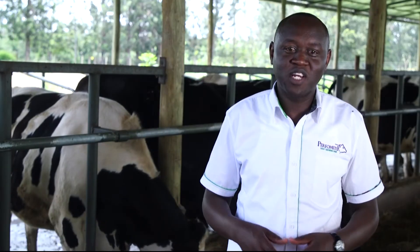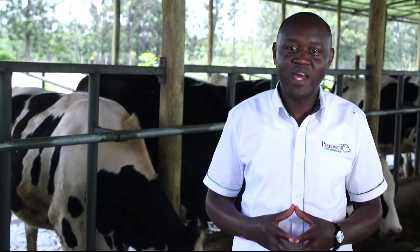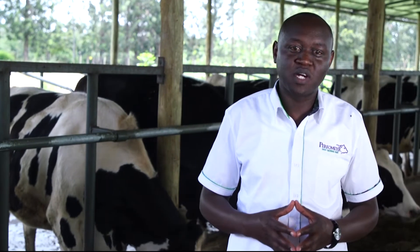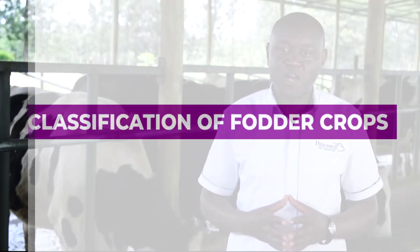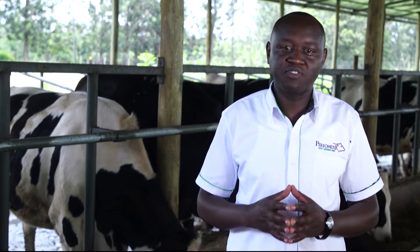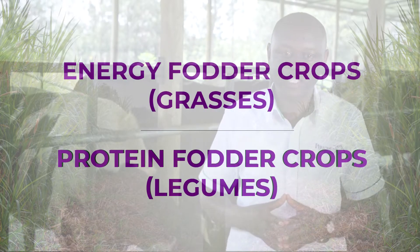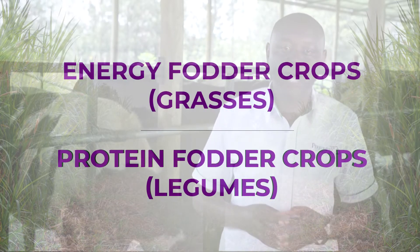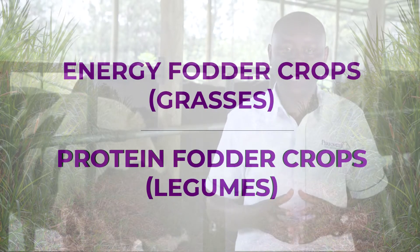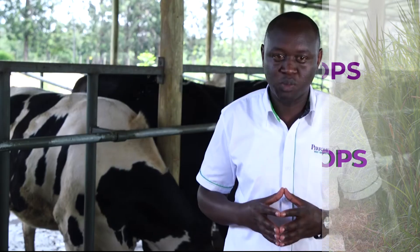Welcome to lesson one, where we are going to talk about classification of fodder crops. Fodder crops are also known as forages and can be broadly classified into two major groups: the energy fodder crops, which are basically grasses, and the protein fodder crops, which are mostly legumes.